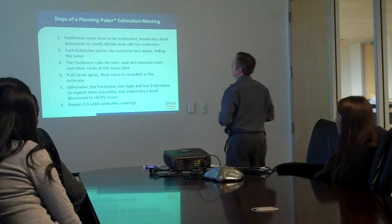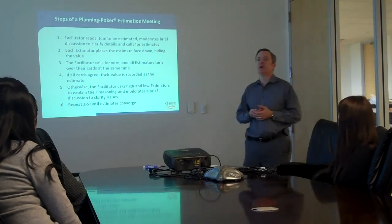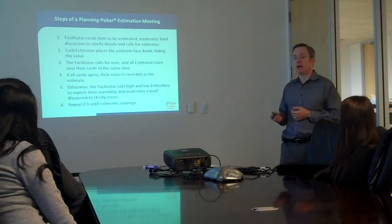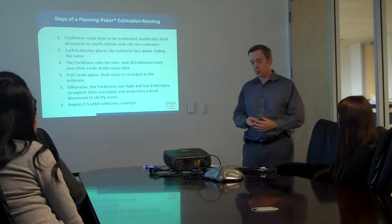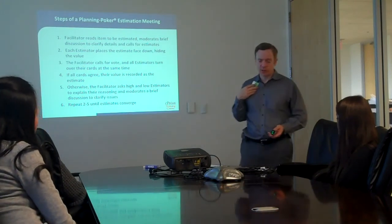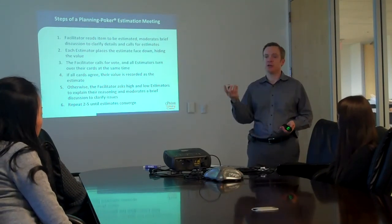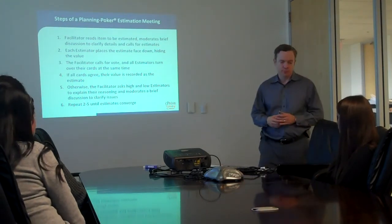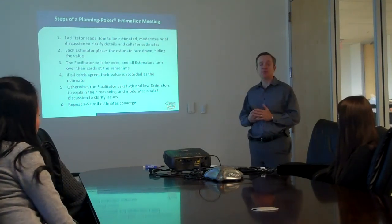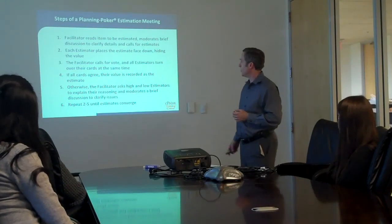The actual conduct of an estimation meeting with planning poker is very simple. The facilitator reads each item to be estimated and moderates a brief discussion — team members talk to each other and to the requirements owner to clarify what is wanted and resolve any open issues. Then the facilitator calls for estimates: each estimator picks a card, hides it so no one else can see it, and when the facilitator calls for the vote, everyone shows their card simultaneously. This is how we avoid expert bias — no one sees anyone else's answer in advance. Sometimes everyone comes up with the same card, and if that's the case we're done — it does happen occasionally. More commonly there will be a range of values, and the facilitator will ask the high and low people to explain their reasoning.